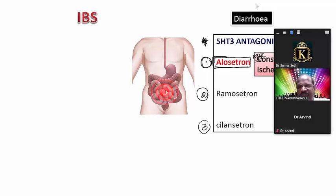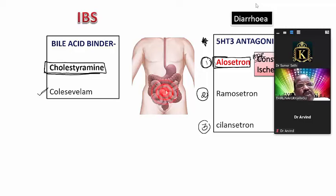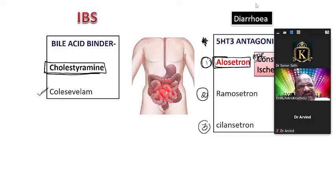Another hypothesis is that bile acid oversecretion causes diarrhea in IBS. To address this, bile acid binders (sequestrants) are used. The most commonly used is cholestyramine. Colesevelam can also be tried — some trials show it is very effective. For treating diarrhea: first consider anti-motility agents, then 5-HT3 antagonists, then bile acid binders.